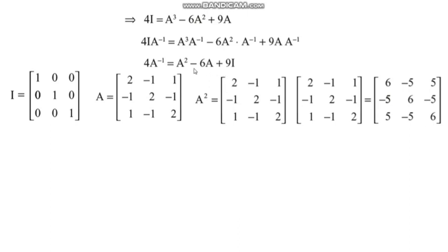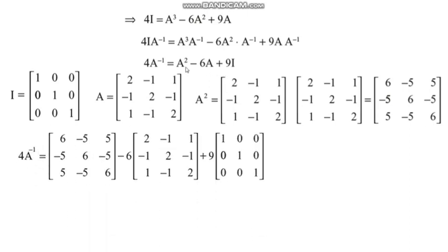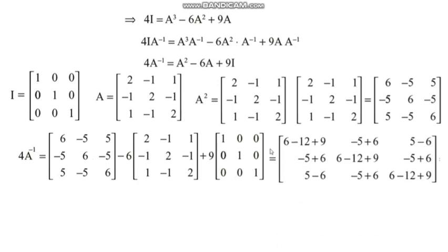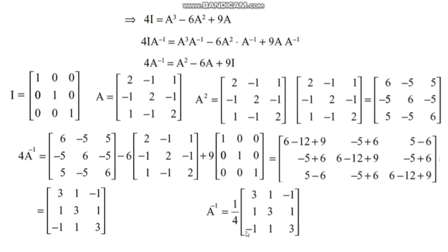To find 4A inverse: substitute A² with the computed matrix, add −6 times matrix A, plus 9 times the identity matrix. The first row first column element is 6 − 12 + 9 = 3. Proceeding for the rest of the elements, we get 4A inverse. Therefore A inverse equals (1/4) times the resultant matrix.